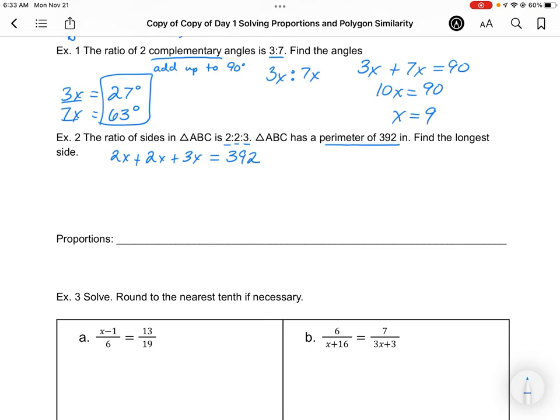We're going to combine our like terms. 2 plus 2 plus 3 is 7x, then we divide by 7. We get x is 56. But they want the longest side, which would be the 3x. So 3 times 56 is 168 inches.